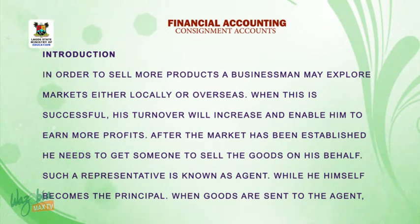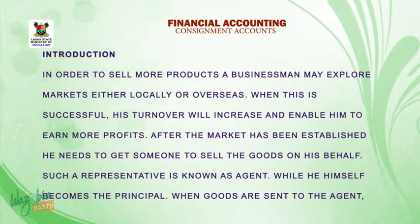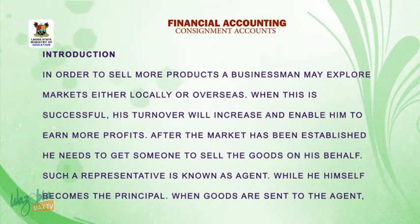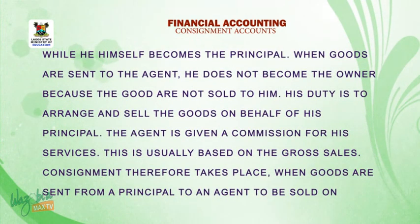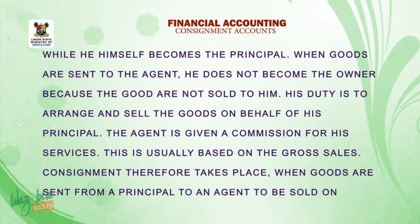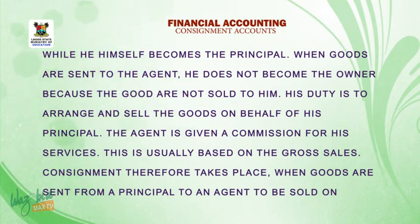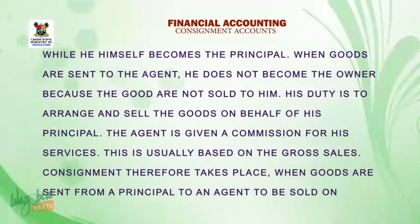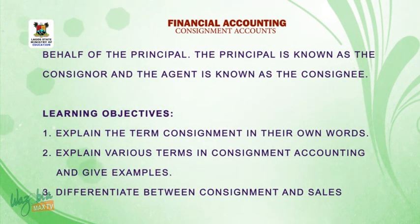Increased turnover enables him to earn more profits. After the market has been established, he needs to get someone to sell the goods on his behalf. Such a representative is known as an agent, while he himself becomes the principal. When goods are sent to the agent, the agent does not become the owner because the goods are not sold to him. His duty is to arrange and sell the goods on behalf of the principal. The agent is given a commission for his services, usually based on gross sales. Consignment therefore takes place when goods are sent from a principal to an agent to be sold on behalf of the principal. The principal is known as the consignor and the agent is the consignee.